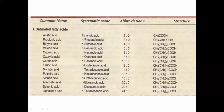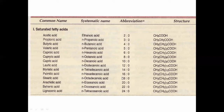Those are all the even carbon fatty acids. Among them, you also have odd carbon fatty acids. The odd carbon fatty acids start with three carbons — propionic acid — and five carbons — valeric acid. So these are the odd carbon number fatty acids.